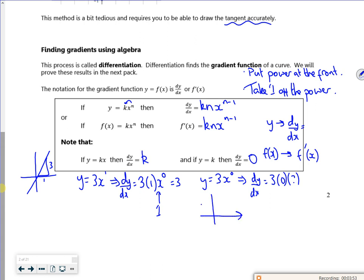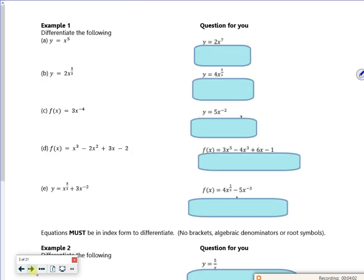And graphically it's the same idea. So if I had y equals 3, you know that the gradient is 0. So it all matches. So that's a general thing. Put the power at the front and take one off the power.